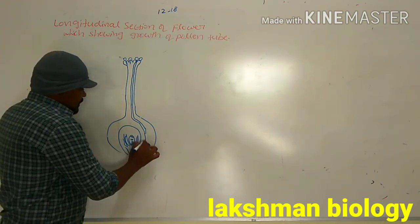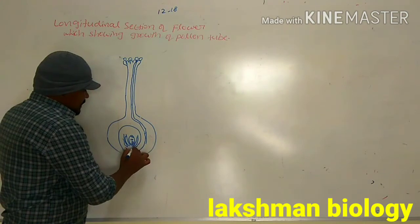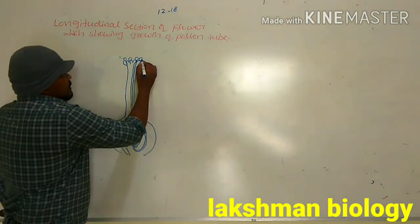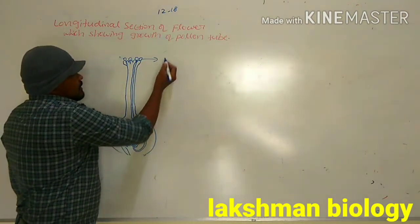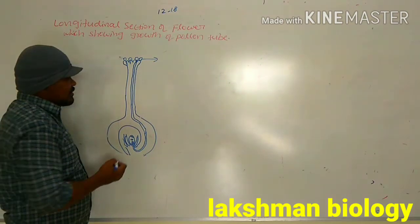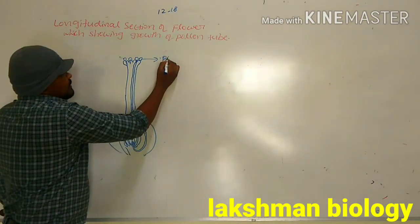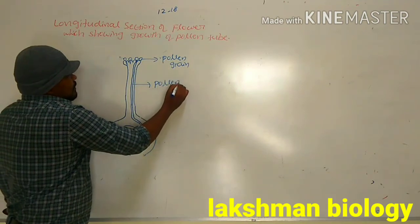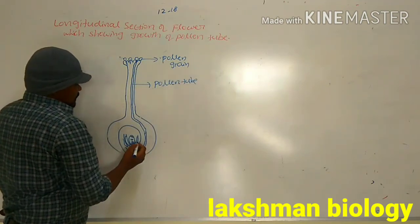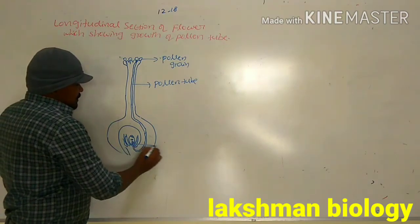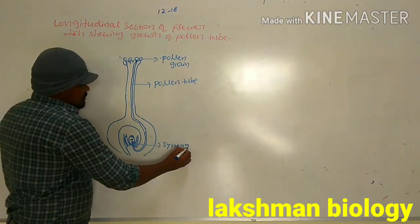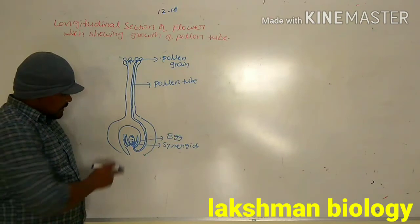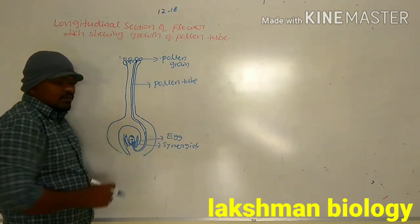Now, we have to extend the pollen tube. This is the pollen tube which is entering into the embryo sac of the ovule. Now, we have to write the parts of the sectional view of the flower which will show the growth of pollen tube. This is the pollen grain. This is the pollen tube. Two synergies are there and one egg cell is there inside the embryo sac, near to the micropyle. Three cells are there — two synergies and one egg cell.